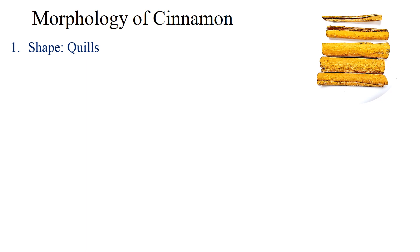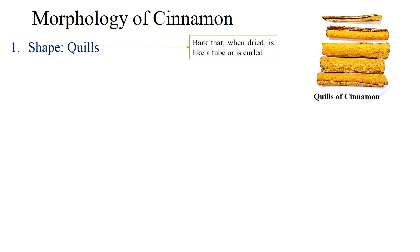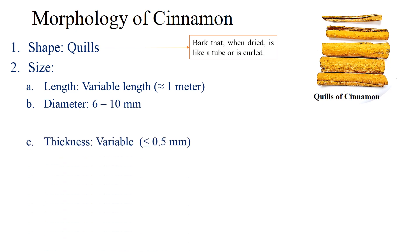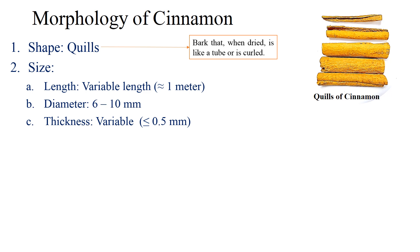Now morphology, or visual identification of cinnamon. Shape: cinnamons occur as quills. Quills means the bark which, when dried, is like a tube or is curled. Size: the length of cinnamon is variable. Cinnamon is imported or exported in large bundles of length 1 meter. The pharma industry receives their supply in shorter length called cigar length. The quills are 6 to 10 mm in diameter. The thickness is variable, and in good quality cinnamon the thickness is usually not more than 0.5 mm.